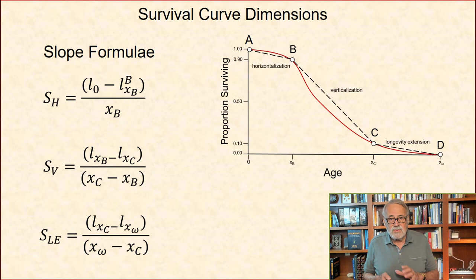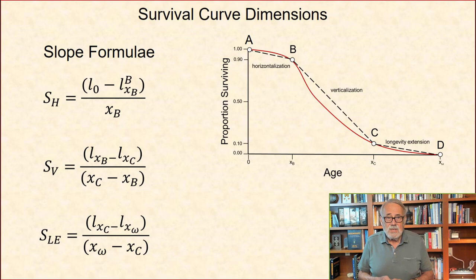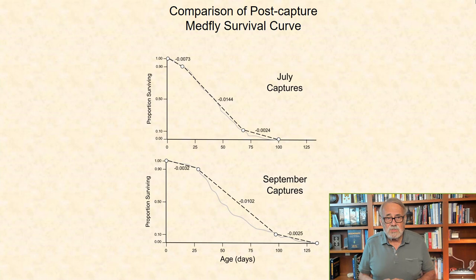So let SH, SV, and SLE denote the slopes of the straight lines defining horizontalization, verticalization, and longevity extension respectively, shown here. Simple algebra yields slopes where ABC denote survival at birth, survival to ages 10% and 90% are dead, respectively. And D is the age of the oldest individual.